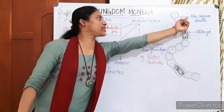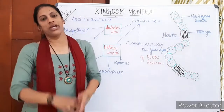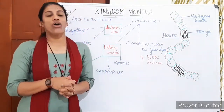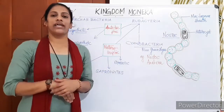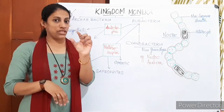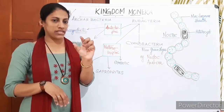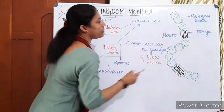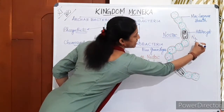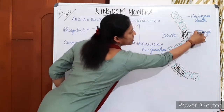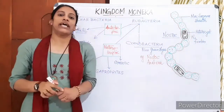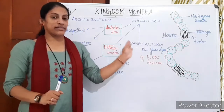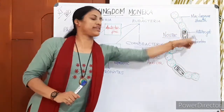The whole colony is enveloped by a mucilaginous sheath or gelatinous sheath in cyanobacteria. Another unique property is that cyanobacteria are able to fix atmospheric nitrogen — they carry out nitrogen fixation with the help of special cells known as heterocysts.